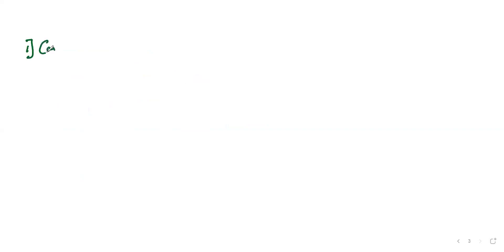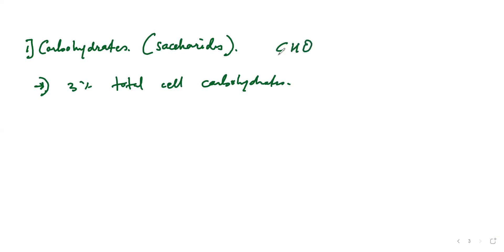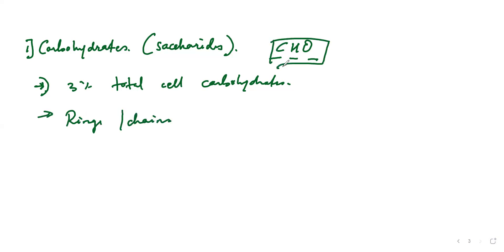First, let's see about the carbohydrates or sugars. We all know carbohydrates — if we take them in, we get energy. They are also called saccharides, meaning sugars, because they are made up of sugars. If you take a cell, approximately 3% of that total cell will be made up of carbohydrates. The basic composition is C, H, and O — carbon, hydrogen, oxygen. These carbon forms are bound together with maybe rings or chains, along with these three molecules.